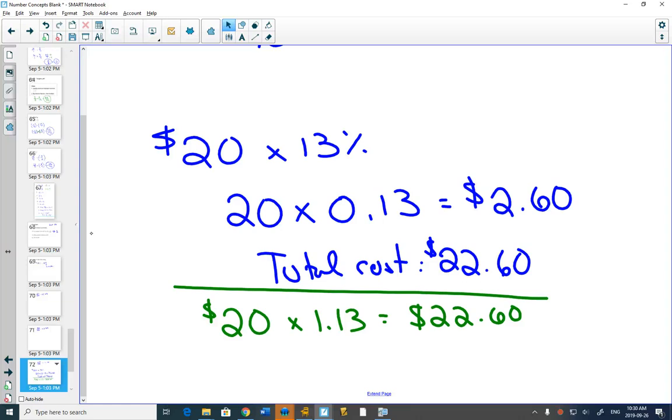That can be really helpful. You find something, it's $56. You go to your calculator, and you say, OK, so 56 times 1.13, it's going to cost me $63.28 in the end.